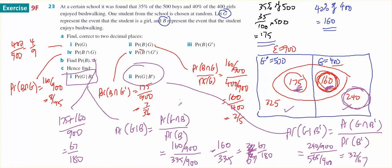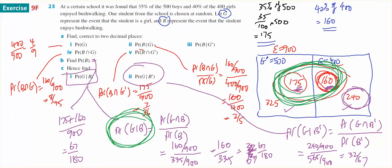I've used the rule to work out all these conditional probabilities. I could actually use conditional thinking to work out this one. This one says they must be bushwalkers. Since they must be bushwalkers, this is now my universal set, this is what it's out of, it's out of 335, and the probability that you're a girl is 160 out of this total of 335, and that's where we ended up with at that point there.